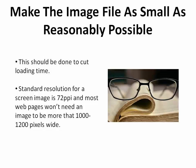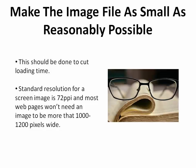Make the image file as small as reasonably possible. Loading times can be crucial for websites to maintain traffic, and images can have a huge impact on this. Standard resolution for a screen image is 72 ppi, and most web pages won't need an image to be more than 1,000 to 1,200 pixels wide. A typical smartphone camera today will give you an image at 72 ppi, but the file will often be over 3,000 pixels wide. Getting a program like Adobe Photoshop would be a good investment, or there are online image editors that work quite well and often don't cost a thing. Two favorites are PicMonkey and Pixel.